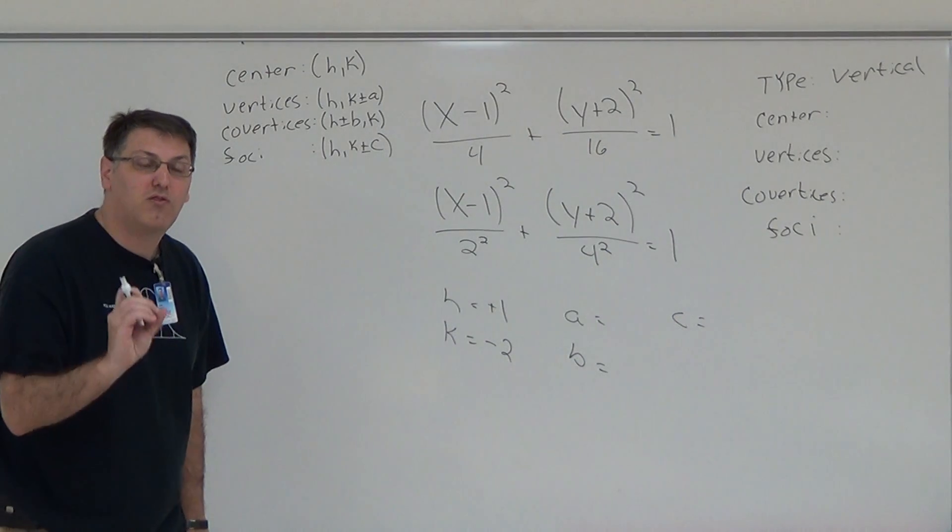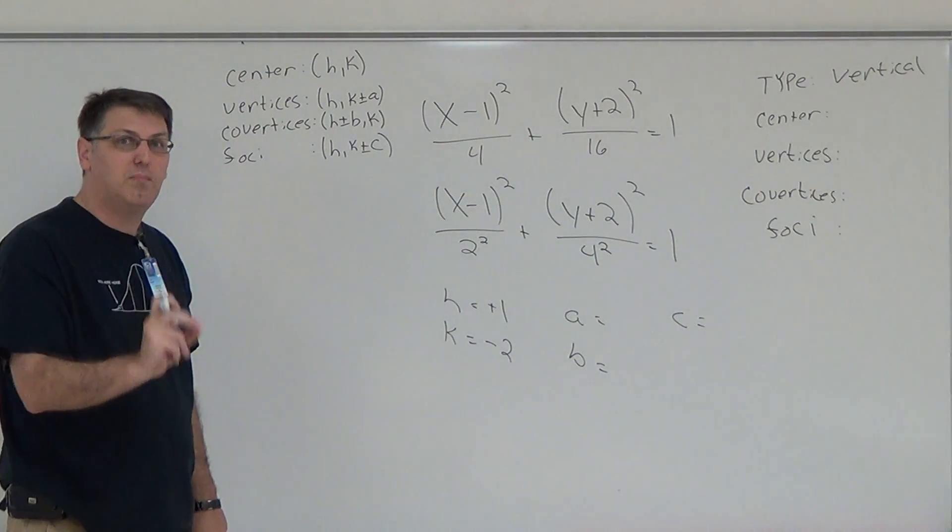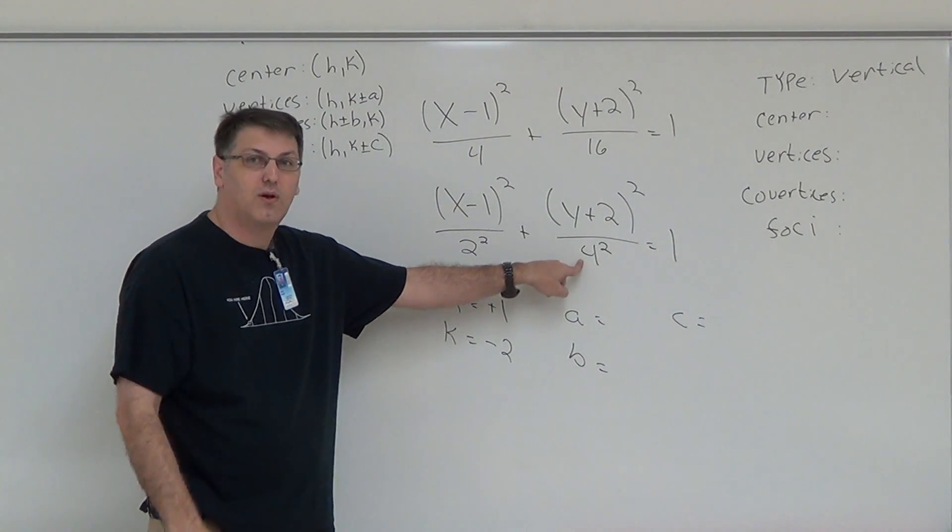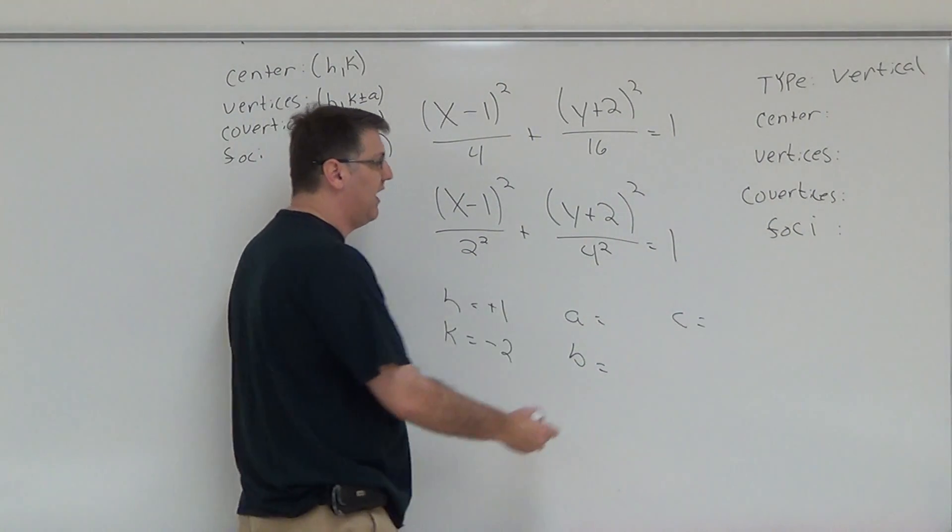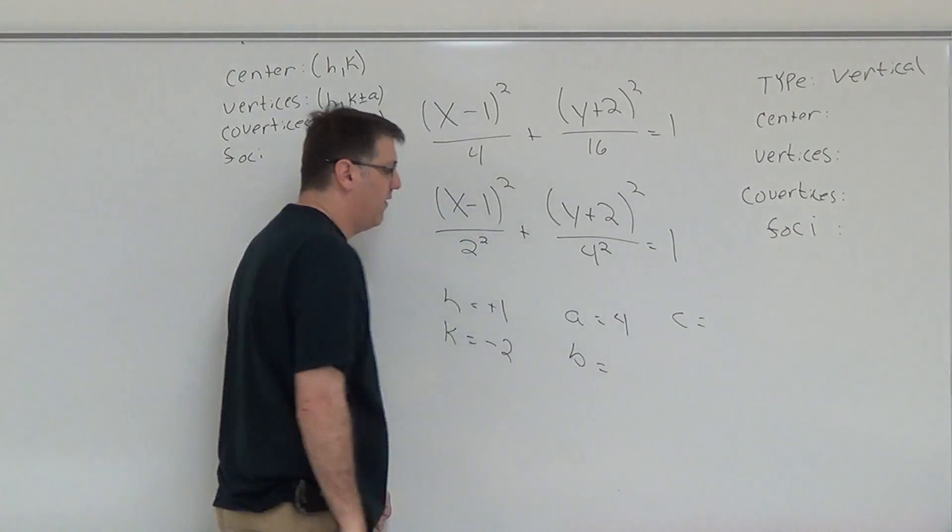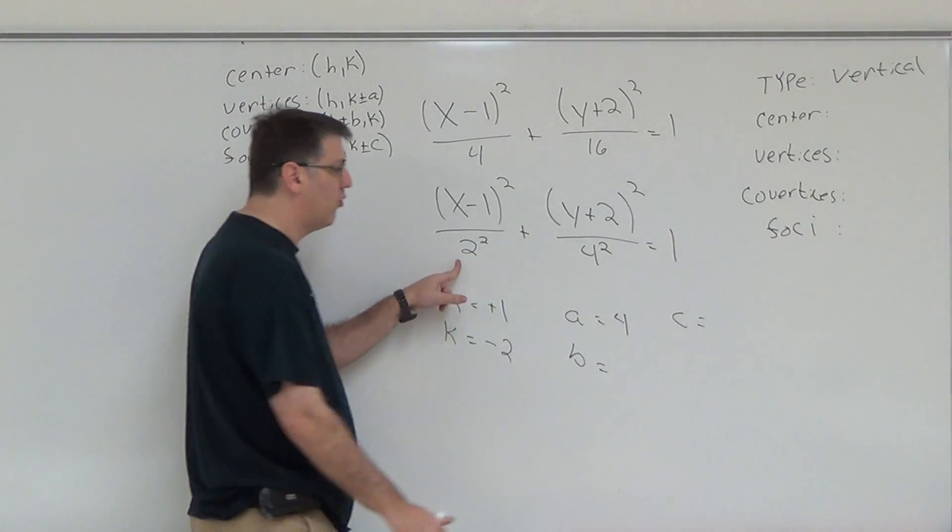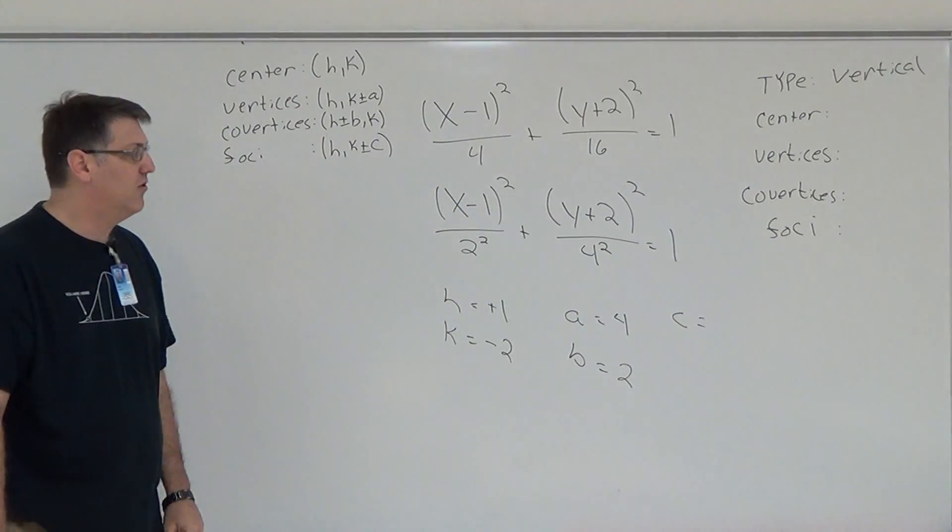My A, for an ellipse, is always the biggest number being squared. I have a 2 being squared and I have a 4 being squared. Well, 4 is bigger than 2, therefore my A is 4. My B is the other number being squared, in this case it is 2, or you can think of it as the smallest number being squared.